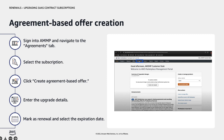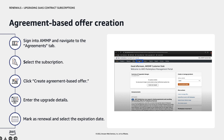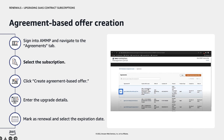All agreement-based offers are created with scheduled payments, which requires buyers to be on invoicing terms with AWS. Once logged into your AWS Marketplace Seller Portal, click the Agreement tab. In the Agreement tab, search the active subscription with your buyer's AWS account ID.